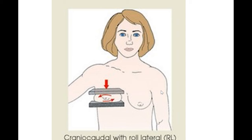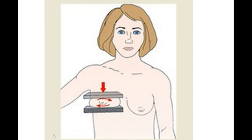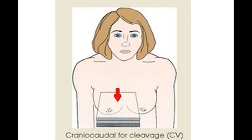The cranio-caudal view with rolled lateral is the same as the standard cranio-caudal view, but we roll the breast towards the lateral side; this brings lesions in the medial side of the breast into focus. The cranio-caudal view with rolled medial is the reverse — we roll the breast towards the medial side so that the lateral part of the breast is more properly visualized. There is also a view where the image receptor and x-ray tube are placed at the medial ends of both breasts simultaneously, so that the medial ends of both breasts are properly visualized together.